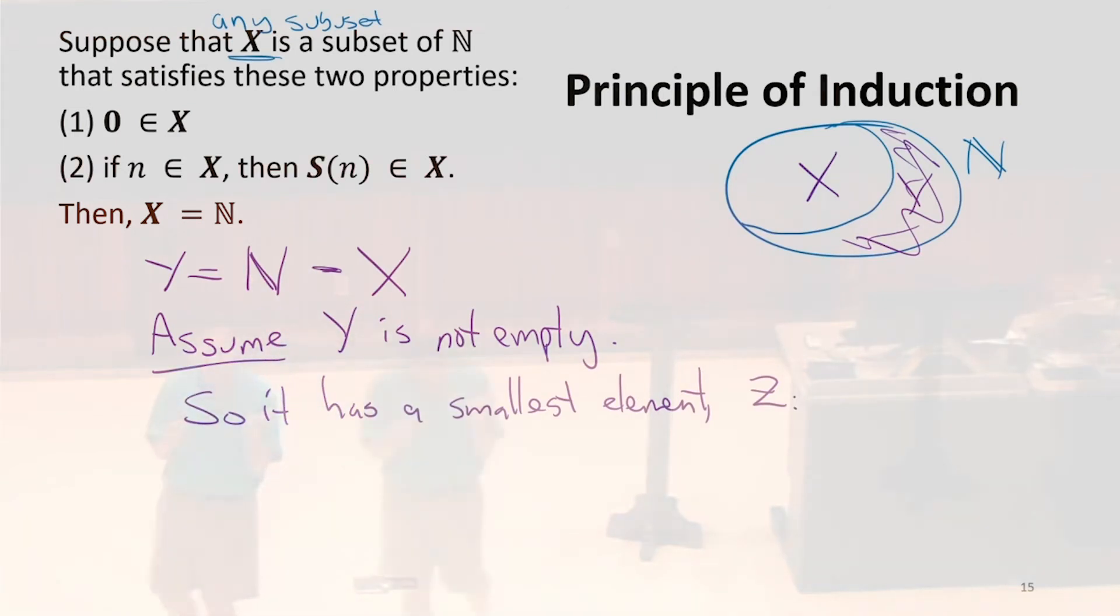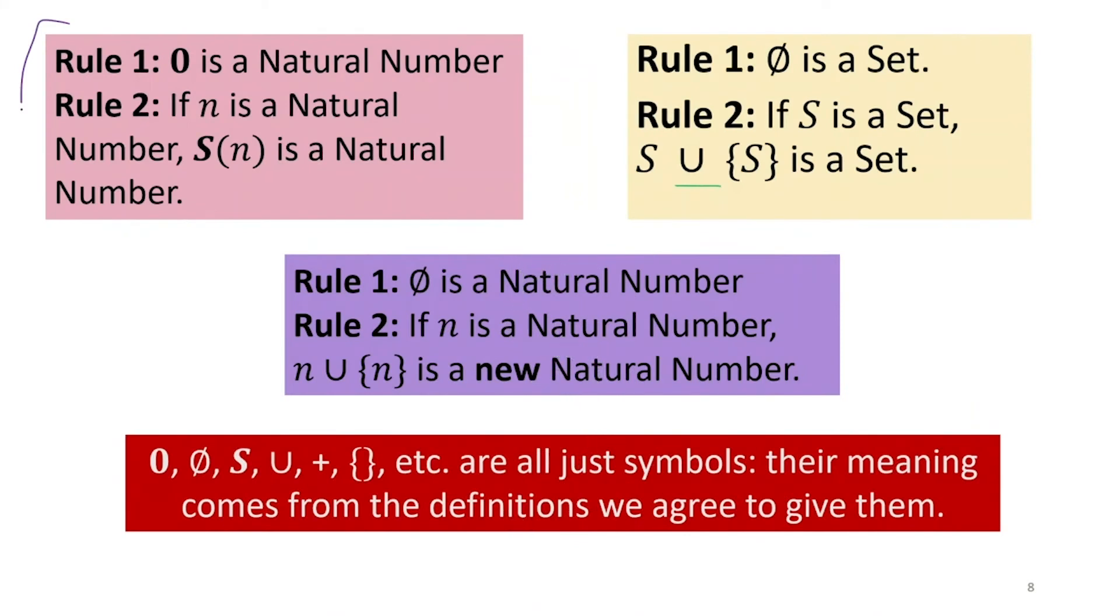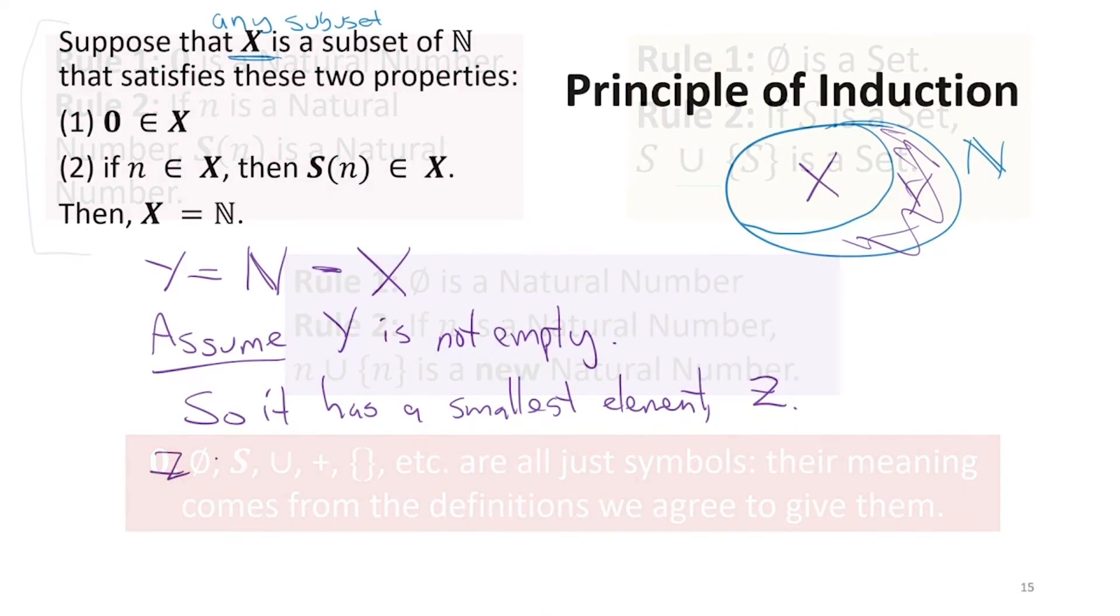What do we know about z? So we know z is not zero, because zero is in X. So what must z be? It's not zero, and it's a natural number. Good. Yeah, it must be the successor of something. There are only two ways to make a natural number. Every natural number is either zero or the successor of some other natural number. So that means this one we picked must either be zero, but it's not zero, because of rule one here. Zero is in X, so zero cannot be in Y, which means z is the successor of some other element.